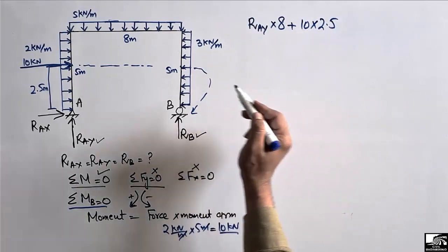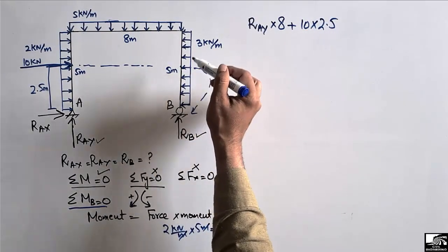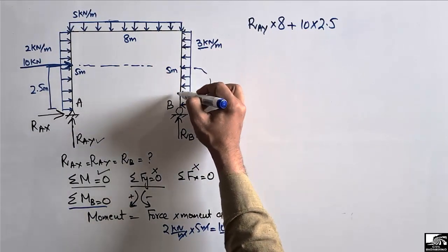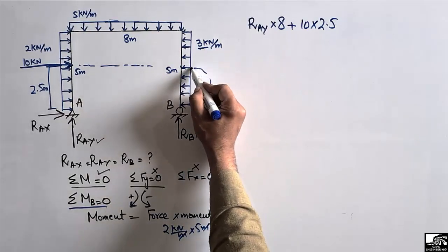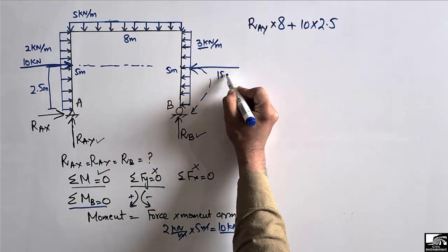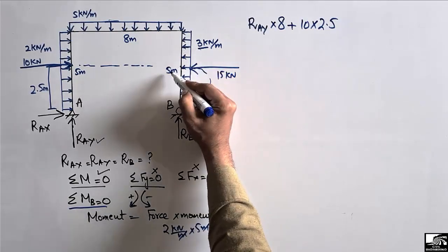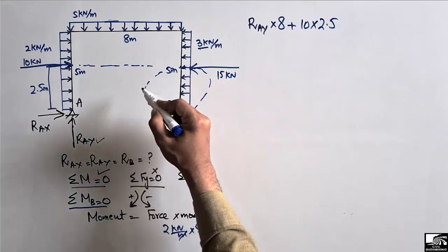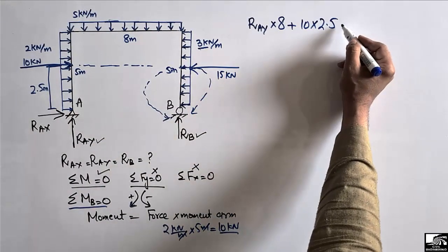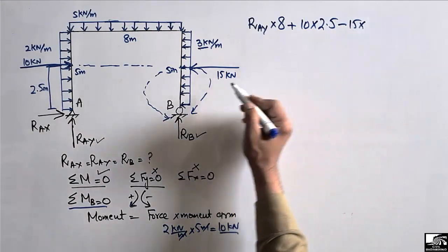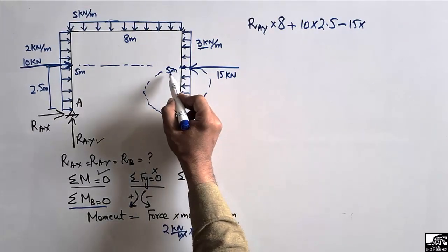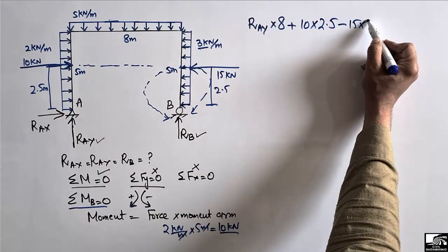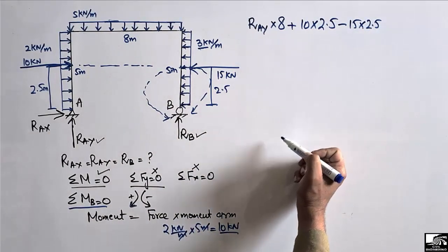The 3 kN/m load on the right column acts over 5 meters, giving a resultant of 3 × 5 = 15 kN. This creates an anti-clockwise moment about point B, so it is negative: −15 kN multiplied by a moment arm of 5/2 = 2.5 meters.